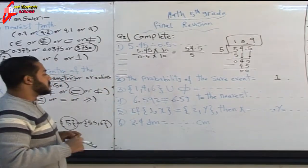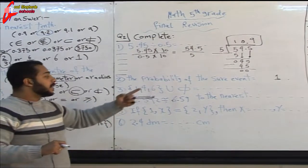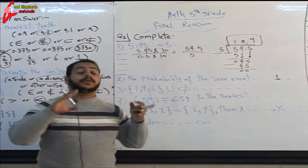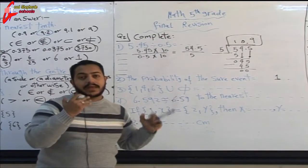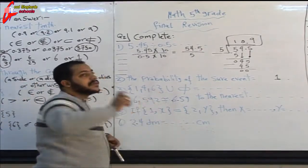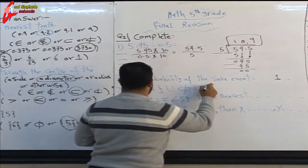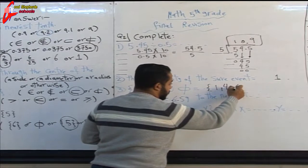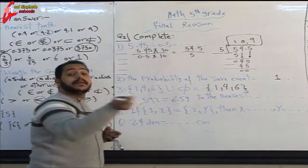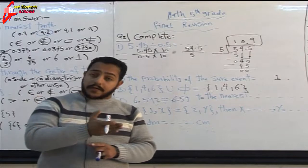Question three complete: the set {1, 4, 6} union the empty set. When we make a union between a set and the empty set, we write the original set: {1, 4, 6}. Note: any set intersect the empty set equals the empty set, but any set union the empty set equals the same set.